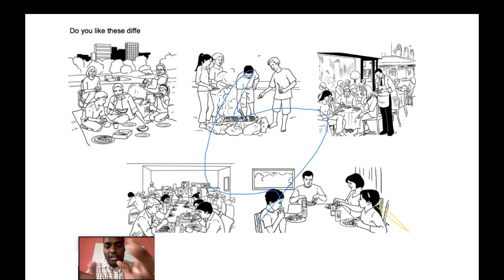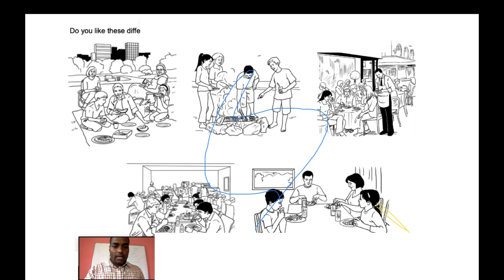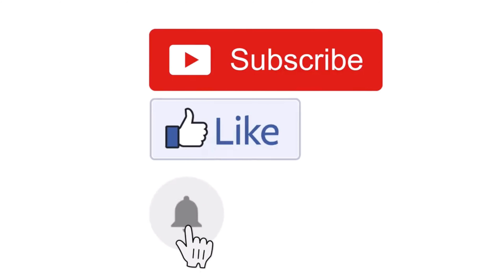In Part 2 of speaking, you'll see a picture with an instruction like 'Do you like these different places to eat?' You discuss each scenario shown in the picture and come to a conclusion about which place you personally prefer — outdoors, a restaurant, a beachside, with family or friends, and so on. You must frame your answers appropriately and express your opinion clearly.